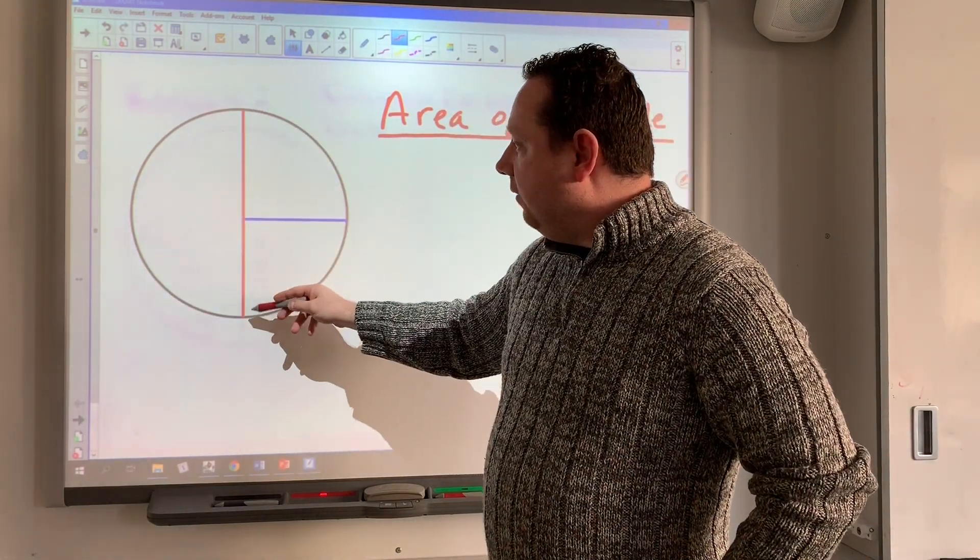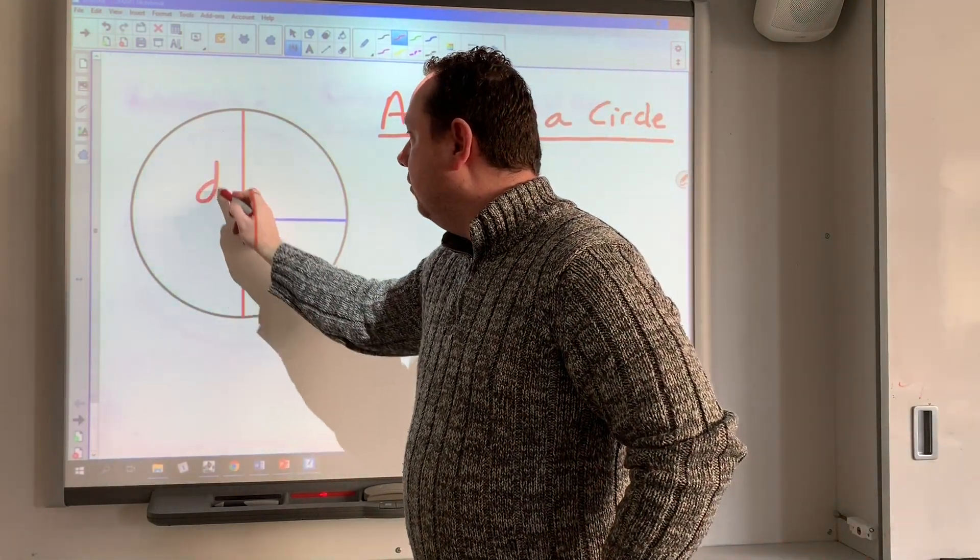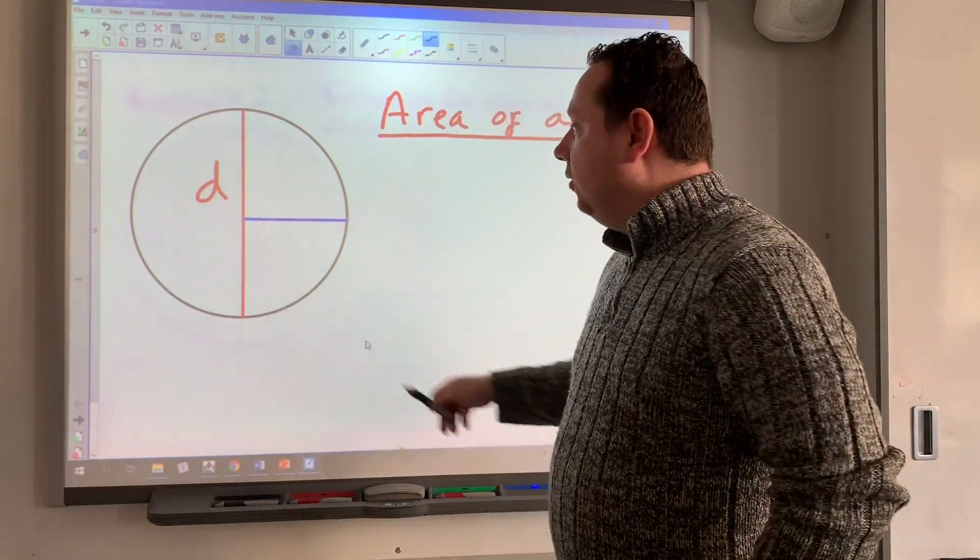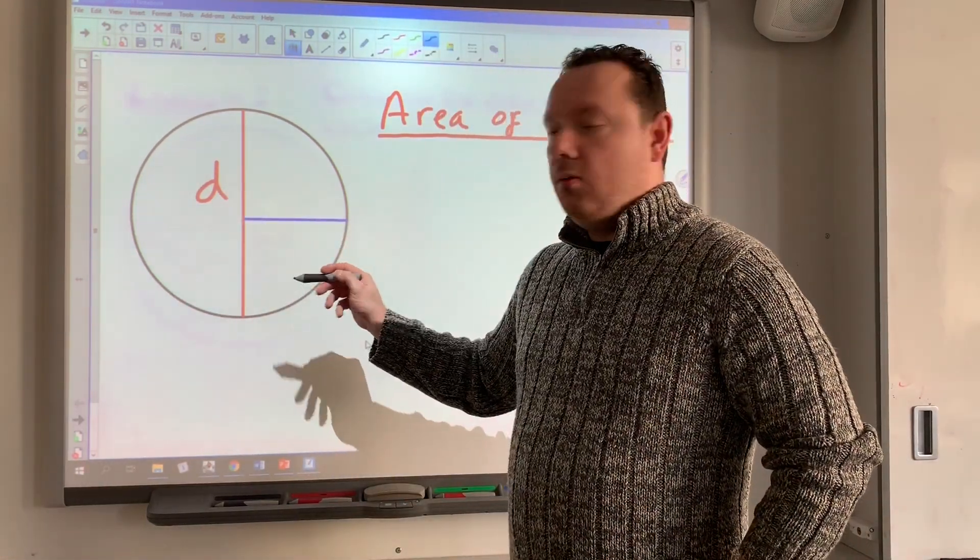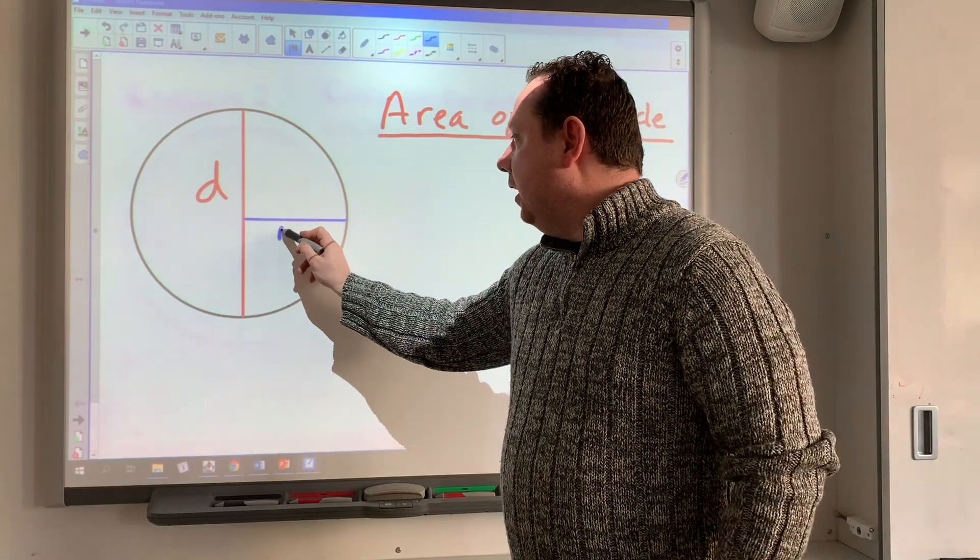The line going straight through the middle is called the diameter. I'll label that d. The line that goes from the middle to the outside of the circle is the radius, which we'll label r.